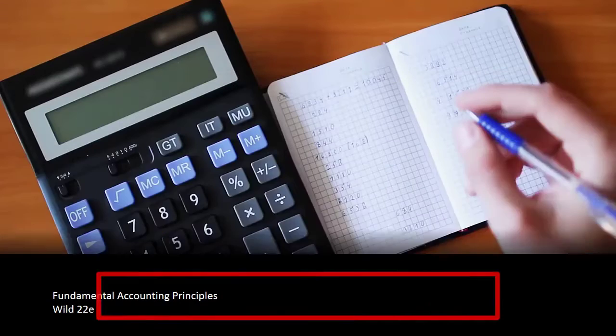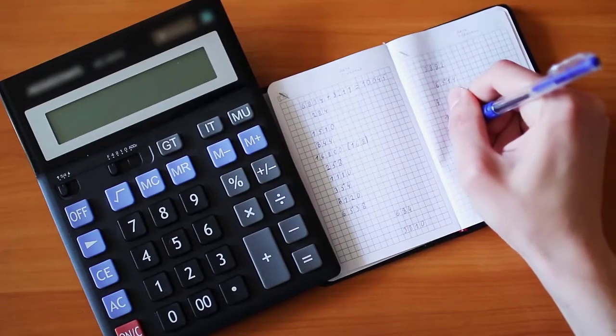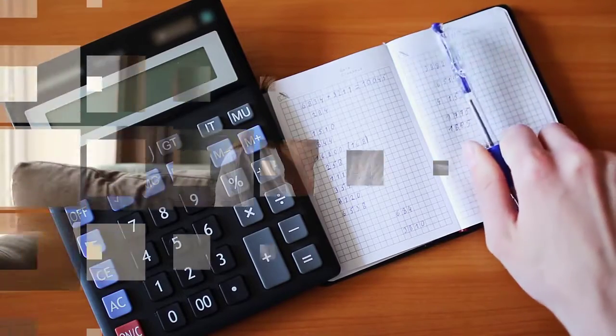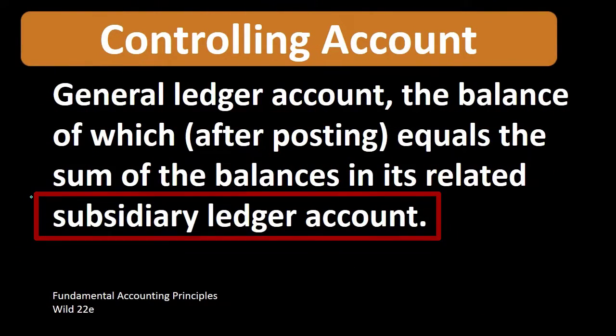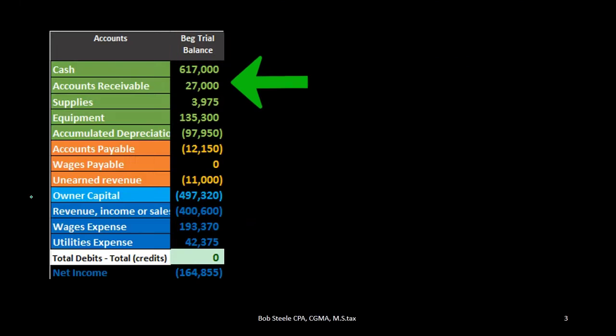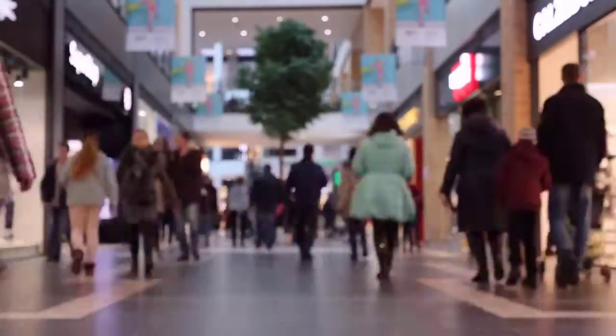With accounts receivable and accounts payable, we have a controlling account that records and counts transactions in a general ledger format. We might also have a subsidiary ledger tracking that same information by customer or by vendor. The total in the subsidiary ledger should match the controlling account when we add up all the transactions.